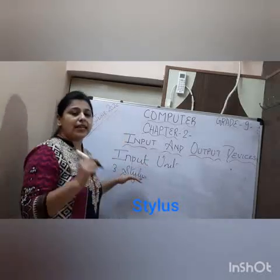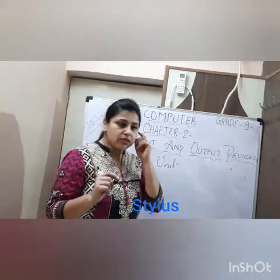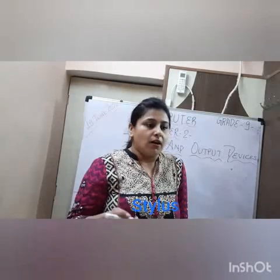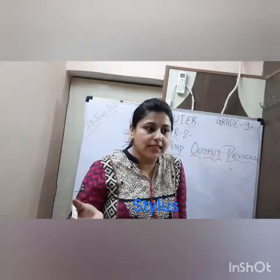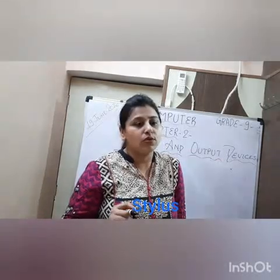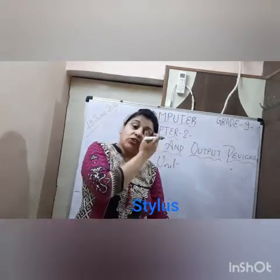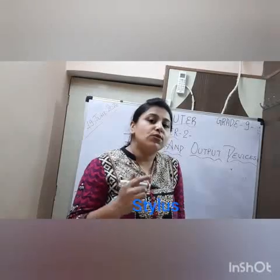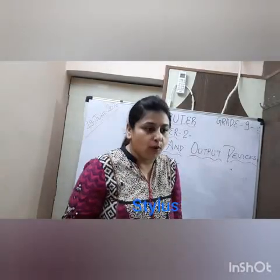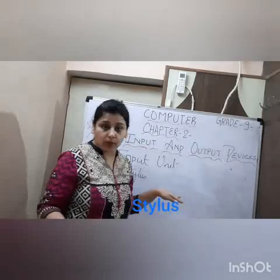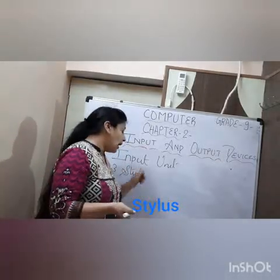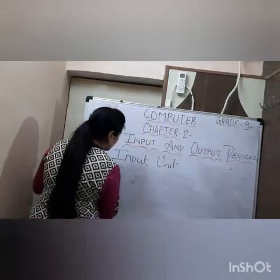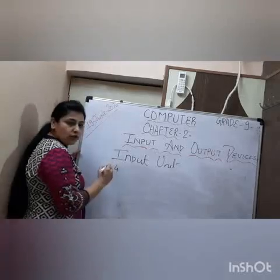The third input device is the stylus. It looks like a pen and is a very small instrument that mostly works on touch screens like mobile phones, computer screens, and tablets. It is used to make selections on touch screen devices directly on the screen, and is used instead of a mouse or trackball. It is also known as pen computing and is mostly used for playing games.